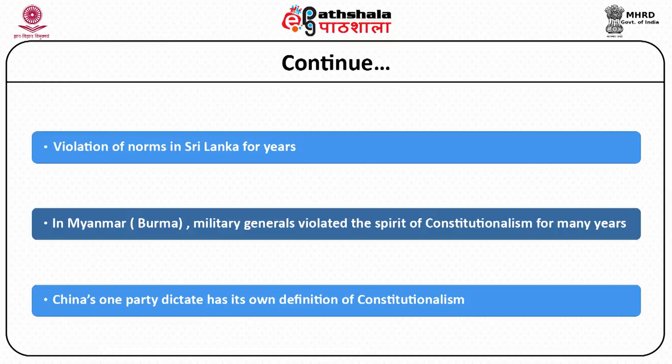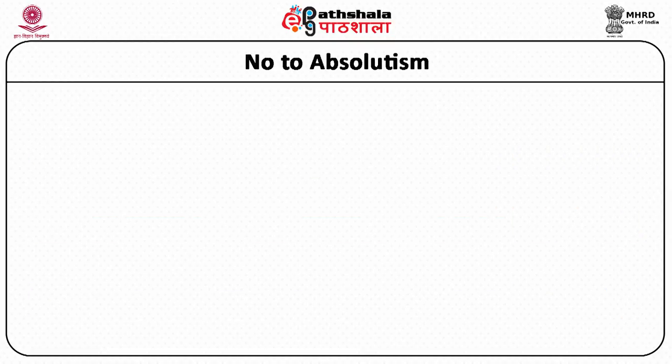China defies any definition of constitutionalism. Everything nominally happens according to the constitution, but everything is handled by the Communist Party of China, which rules by its own definition and its own rules and regulations. Myanmar or Burma is ruled by a set of generals who have kept freedom of the press away, who did not approve any political party, and kept the main opposition leader Aung San Suu Kyi under house arrest for many years, separated from her husband and son who were based in England. This has been the sorry state of affairs in Asia, the largest continent, for a long time.